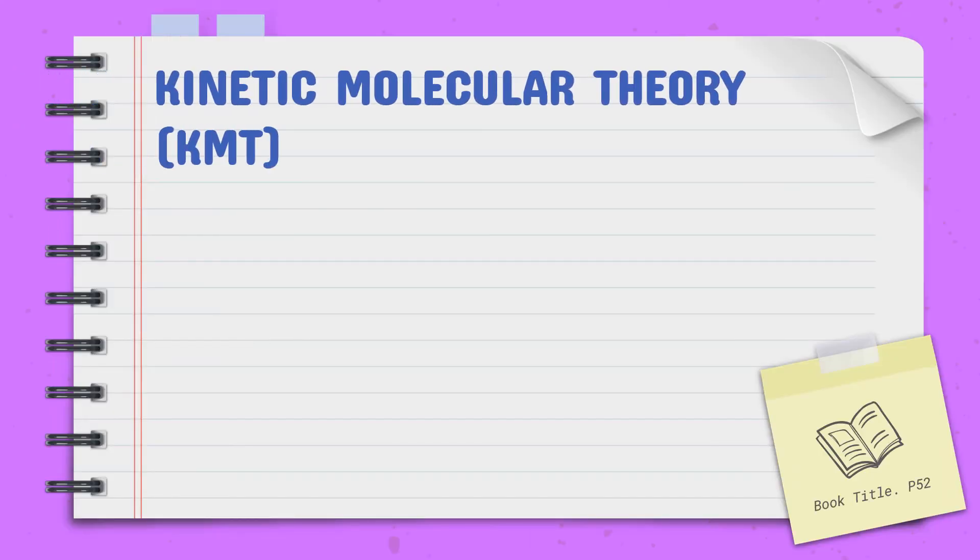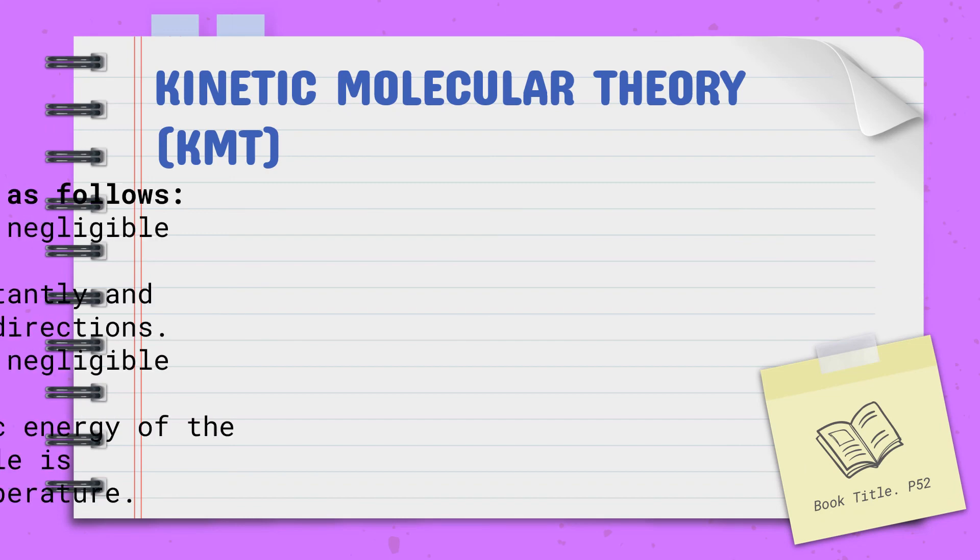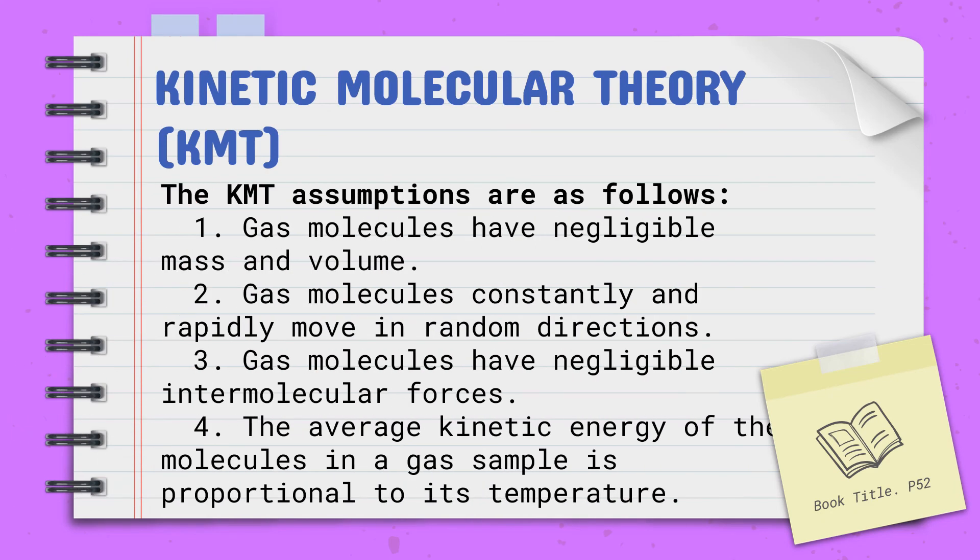So that's it for the Kinetic Molecular Theory. Just remember then, on the Kinetic Molecular Theory, the following are described: Number one, gas molecules have negligible mass and volume. Number two, gas molecules constantly and rapidly move in a random direction. Number three, gas molecules have negligible intermolecular forces. Number four, the average kinetic energy of the molecules in a gas sample is proportional to its temperature.